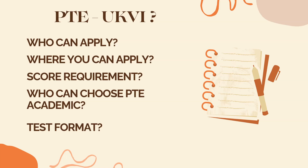Now, if you want to pursue your graduation, master's degree, or doctorate degree, then you have to apply for PTE Academic, and the score requirement is 59 overall or above. In the end, if you want to apply for a family visa or settlement visa, then you must appear in PTE Home. It's a pass-fail test, not AI-based.